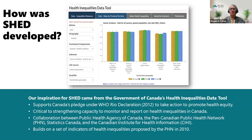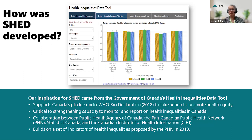How was SHED developed? We started pre-pandemic in 2018 thinking about this project. We wanted to work collaboratively across agencies to develop a version of the Health Inequalities Data Tool that was more simplified, drilled down to our southeastern populations, and continued with intersectional analysis by sex and gender if possible. We also wanted to be able to monitor inequities over time.